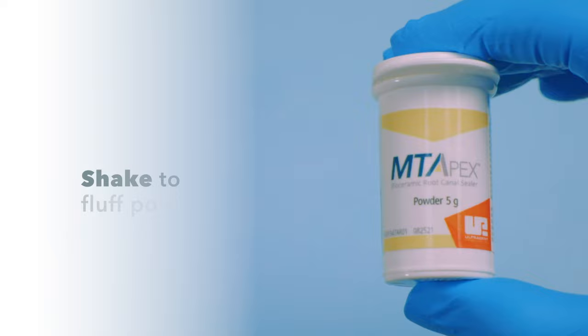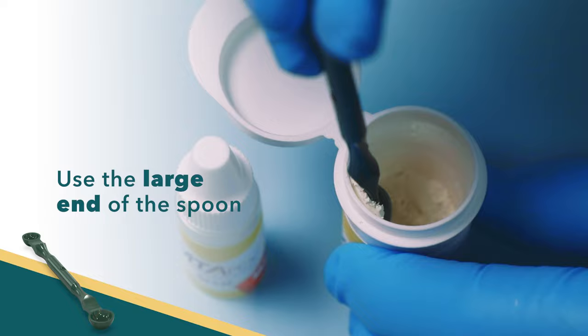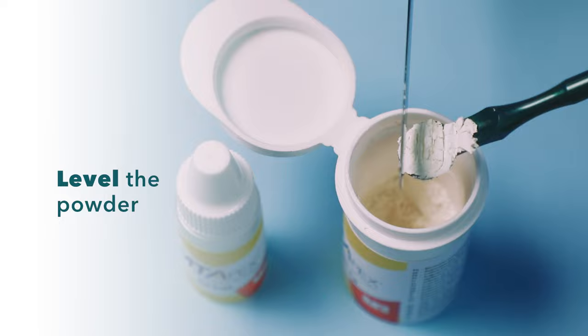To dispense the powder, shake the bottle to fluff the powder. Use the large end of the measuring spoon to scoop up the MT apex powder. Use a spatula edge to level the powder and deliver to a mixing surface.